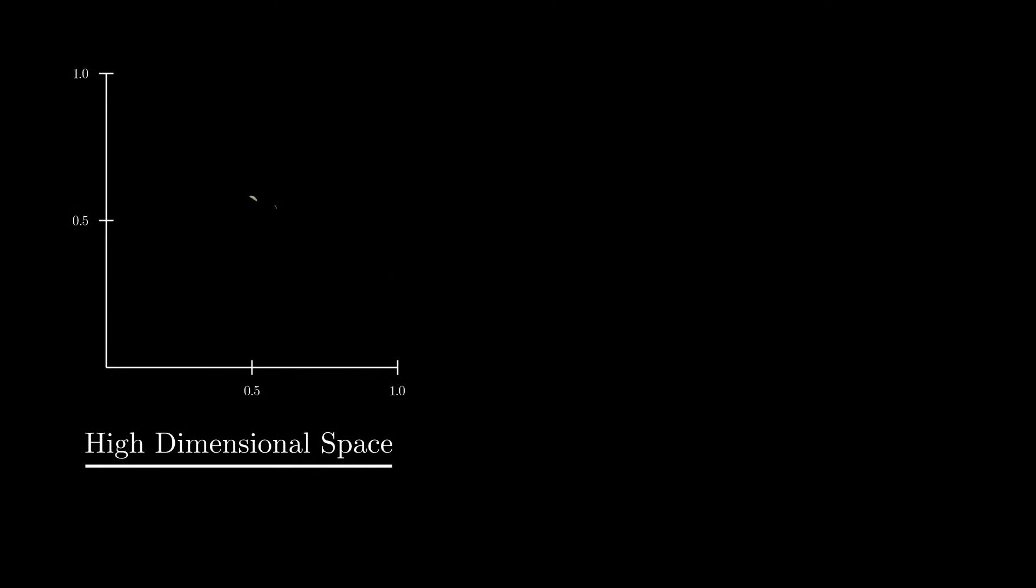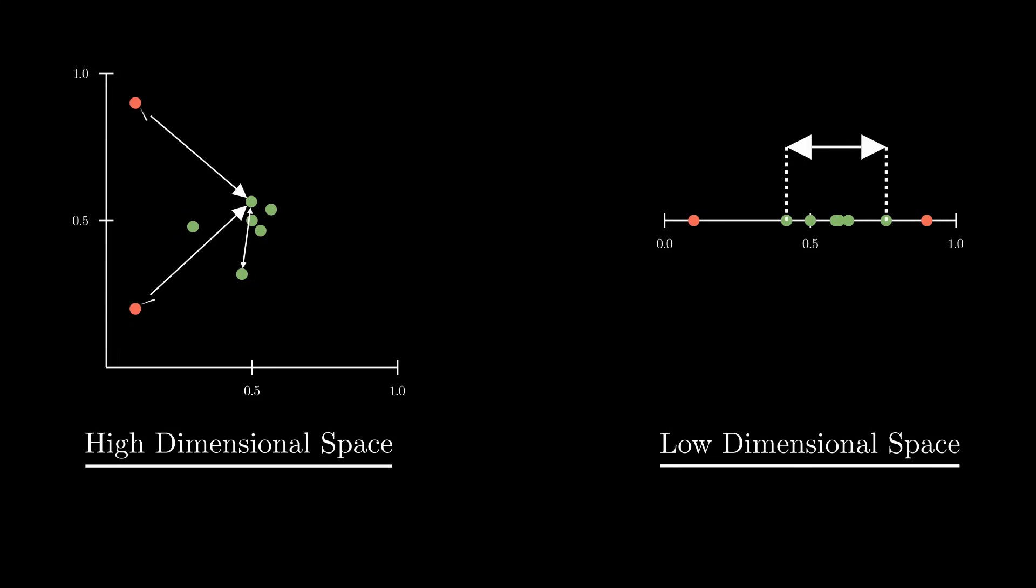The main idea behind SNE is pretty straightforward. Points that are close to each other in high-dimensional space should also be close to each other when we bring them down to a lower dimension. To make this happen, we measure the distance between a point and its neighbors in the high-dimensional space, and then we try to make sure those distances stay similar in the lower-dimensional space.